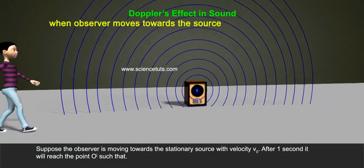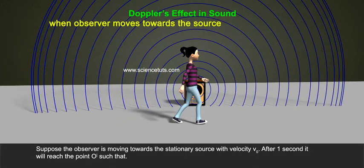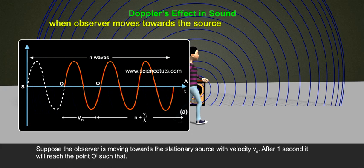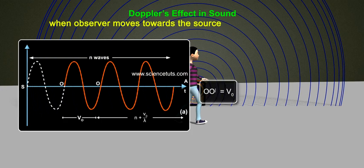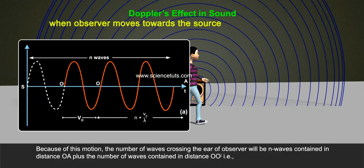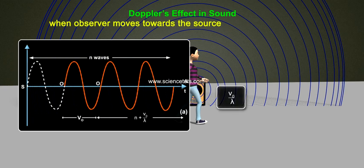When observer moves towards the source. Suppose the observer is moving towards the stationary source with velocity v0. After one second, then it will reach the point O' such that O O' equals to v0. Because of this motion, the number of waves crossing the year of observer will be n waves contained in distance O-A plus the number of waves contained in distance O O' that is v0 by lambda.